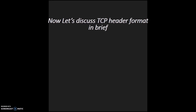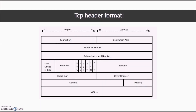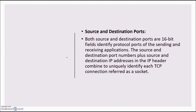Now let's discuss the TCP header format in brief. The TCP header consists of source port, destination port, sequence number, acknowledgement number, data offset, reserved, and six flags: urgent flag, acknowledgement flag, push flag, reset flag, sync flag, and finish flag. Along with these, it also contains window, checksum, urgent pointer, options, padding, and data.